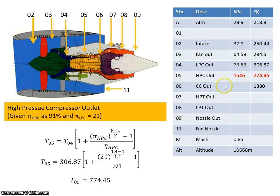So the output of the compressors and the fan culminates with a pressure of 1546 kilopascals and a temperature of 774.45 degrees Kelvin. And that's what's going to go into the combustion chamber. We'll look at that in the next video.